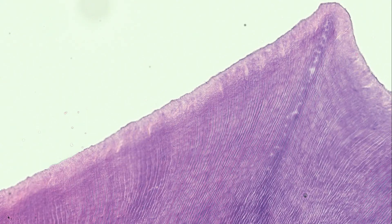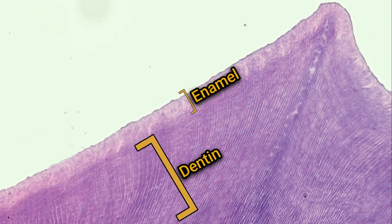Telling apart enamel from dentin is very difficult on standard stains. In this image, you can see how the surface of the tooth is covered by a much more basophilic layer, without any dentin tubules — this is the enamel. You can see how thin it is compared to the underlying dentin.